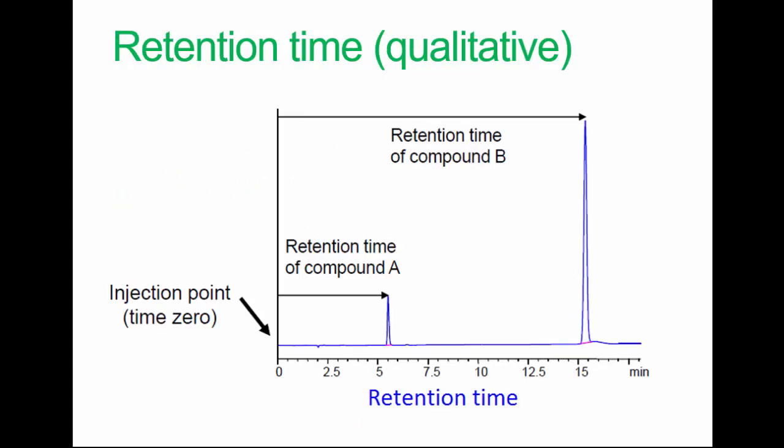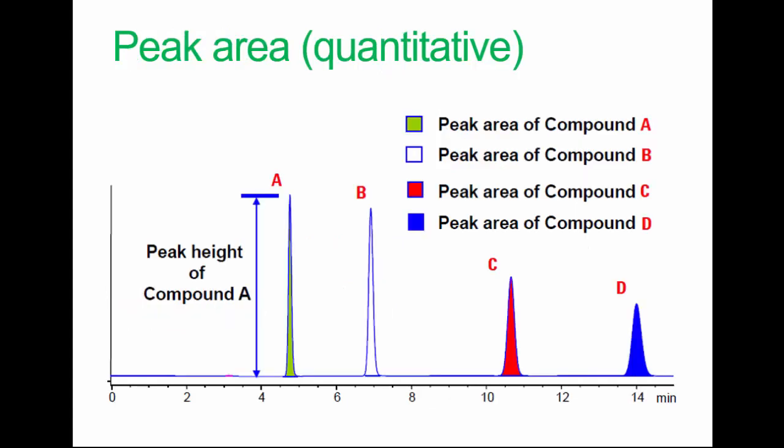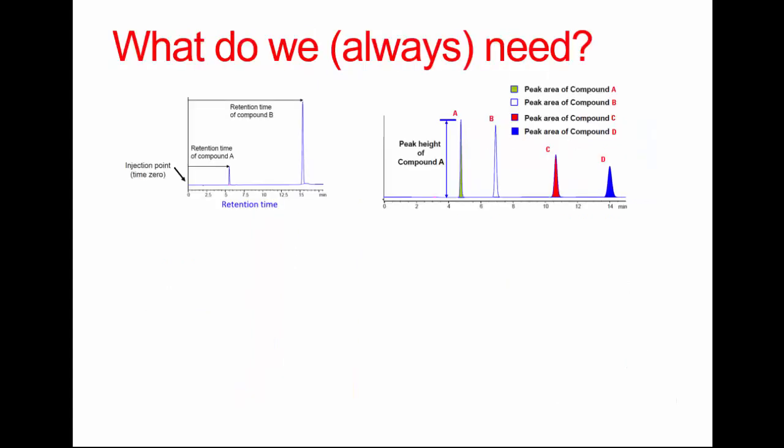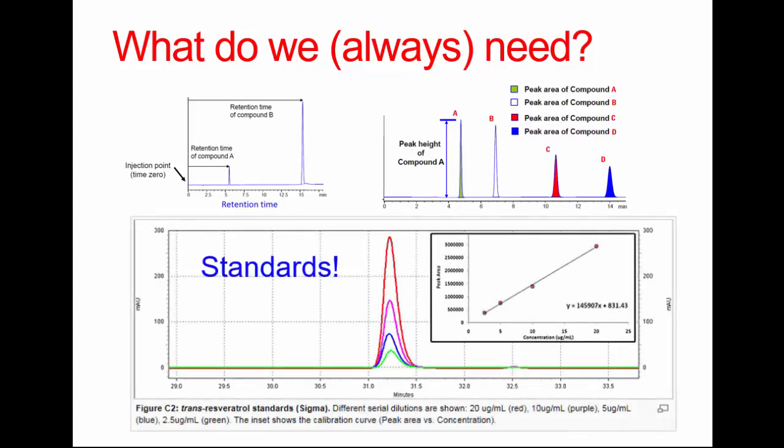Retention time is used to identify components. The system records this, of course, and peak area automatically. Peak height can be useful for optimizing systems, and the system will report this. But peak area is what we use for quantification. As usual, standards are needed and calibration lines and all the usual stuff we do. And there's an example down there, which you're familiar with, of course, from previous work we've done.